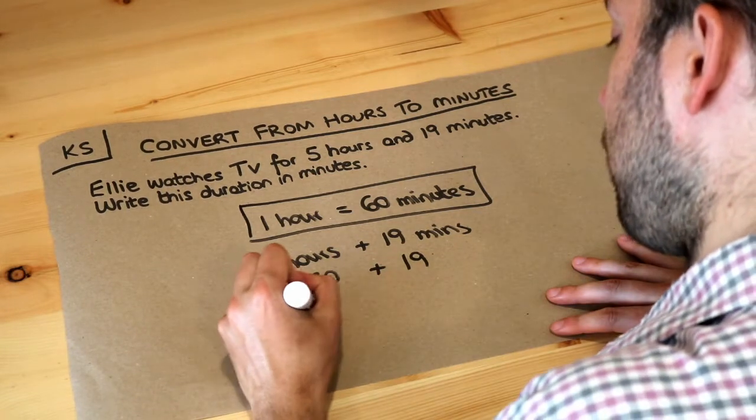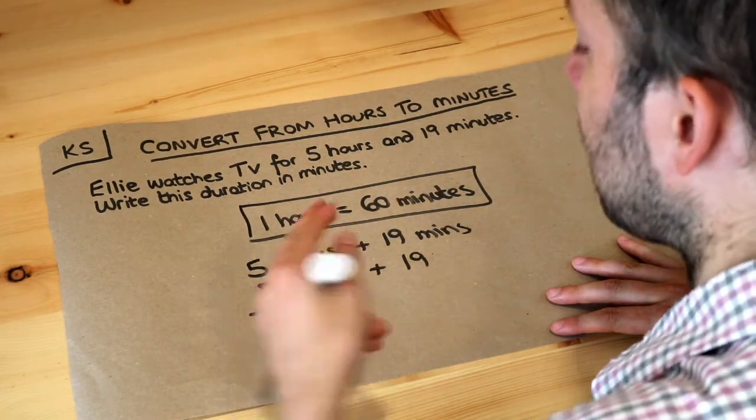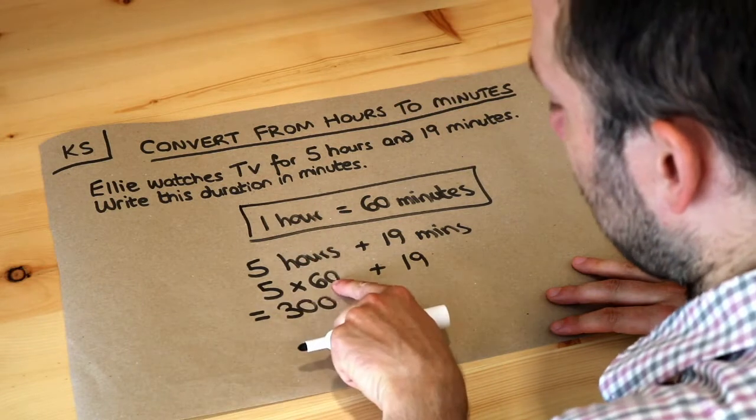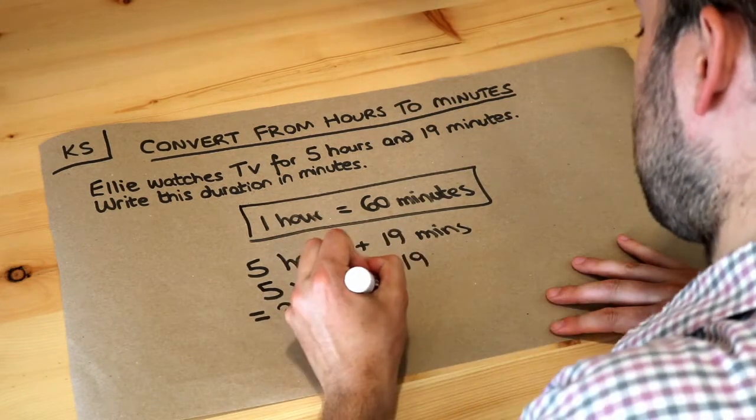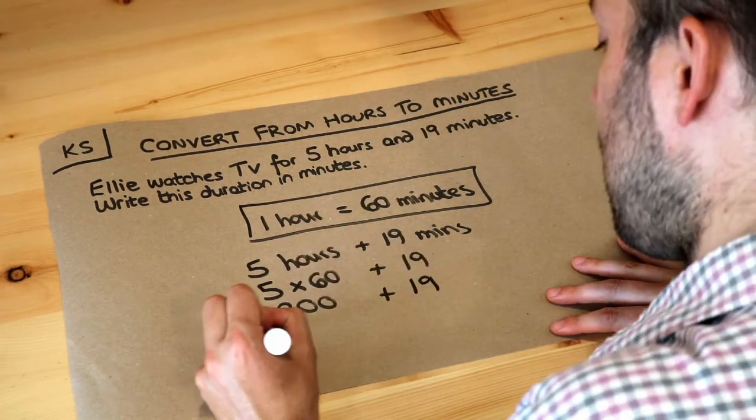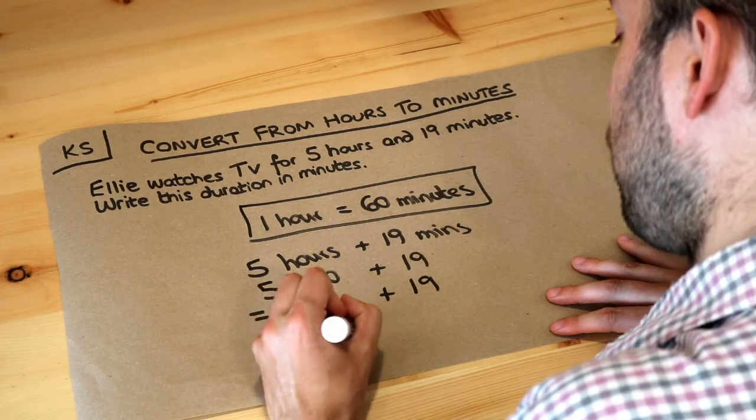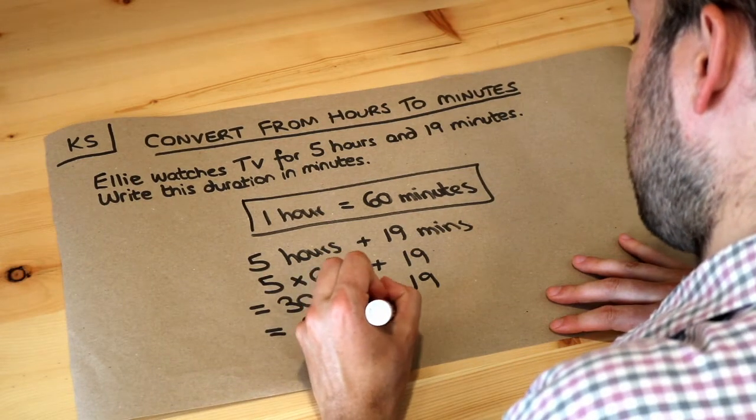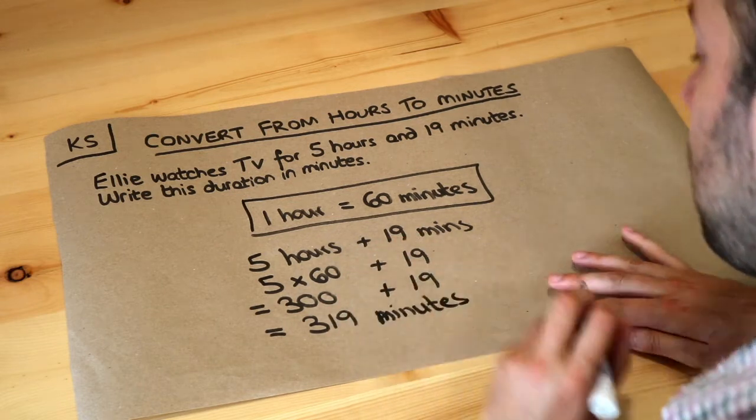Now five times 60 is 300 because five times six is 30 but we've got that zero so we need to add the extra zero on the end, plus the 19, and that gives you 319 minutes in total. So that would be the final answer.